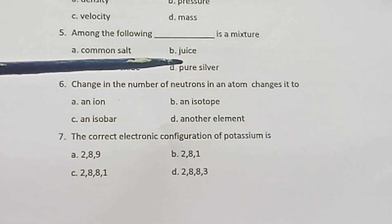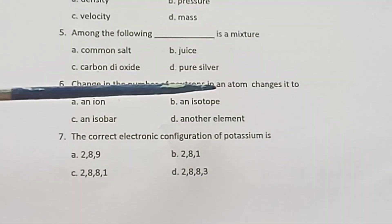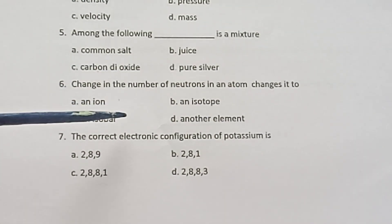Question 6: Change in the number of neutrons in an atom changes it to: an ion, an isotope, an isobar, or another element.